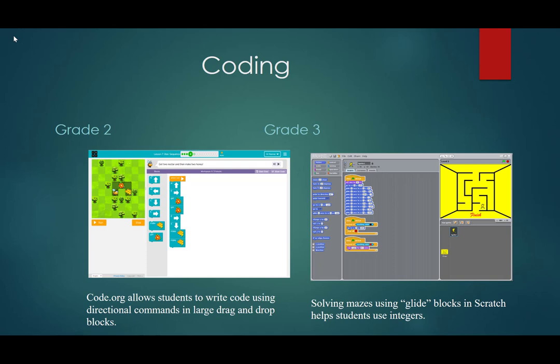In grades two and three, we continue with if conditions and algorithms and loops. And the code on the left in grade two, we use code dot org and it allows students to, especially with the if conditions. So looking at the bee, if the bee gets the flower, it has the conditions to create honey.